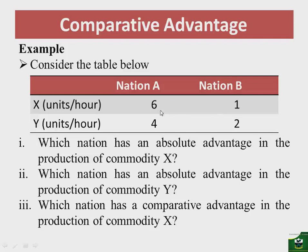If you check the gap, you will see that it is big. Nation B would need six hours to produce the six units that nation A produces in one hour. For commodity Y, nation A produces four units in one hour and nation B produces two units in one hour, meaning nation B would need two hours to match nation A's output level in Y.